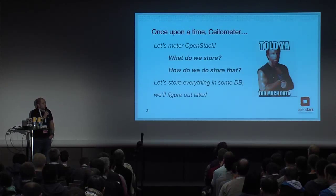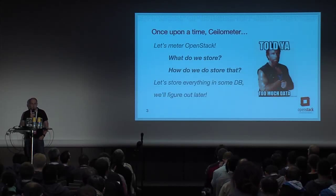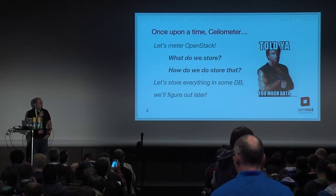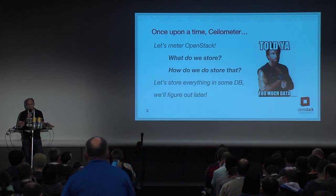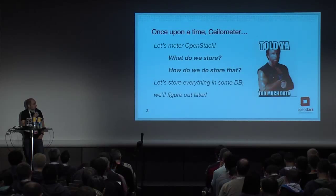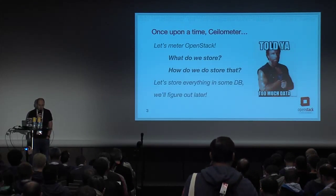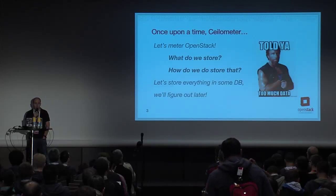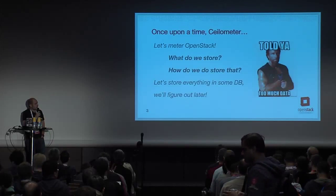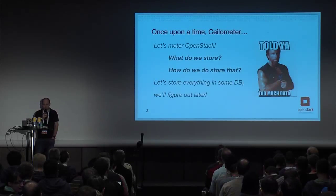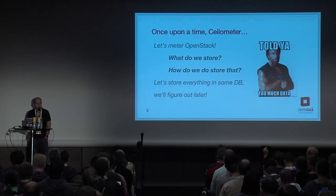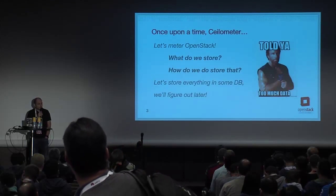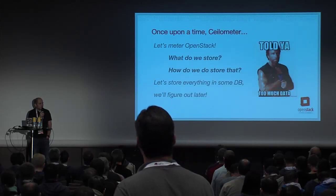Before we start talking about Gnocchi, I think it's a good idea to take a step back on Xenometer itself — how it started and what the motivation behind it was. When we started Xenometer about two years ago, we had a lot of problems we wanted to solve. The first use case was billing, but we soon discovered that what we wanted to do was metering. So we started to meter OpenStack and everything in it, pulling things, receiving events and notifications, and building a lot of data from this.